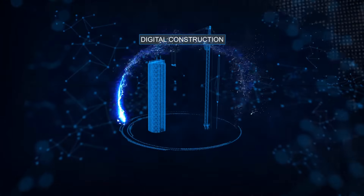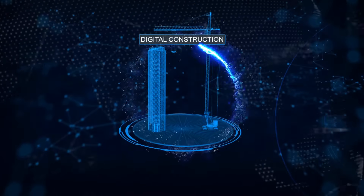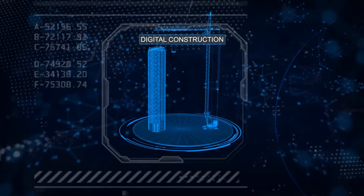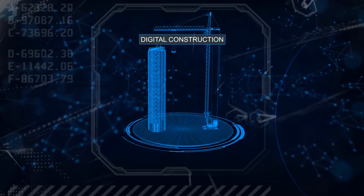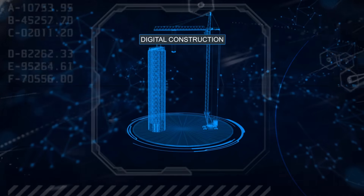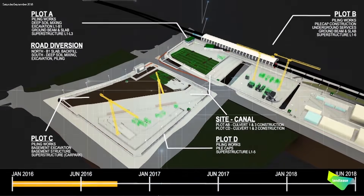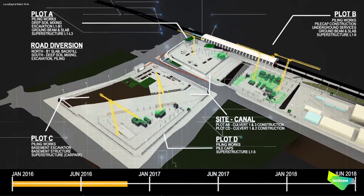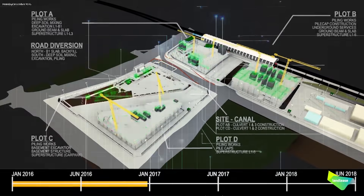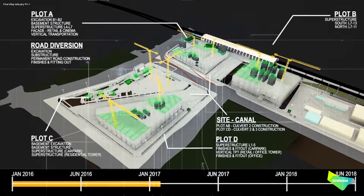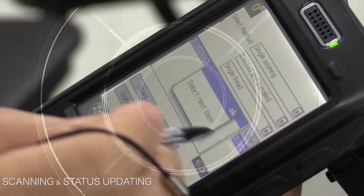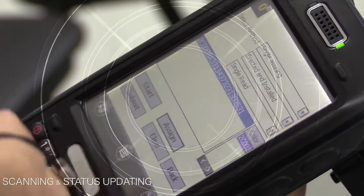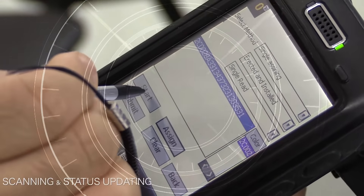Digital construction involves the delivery and installation of off-site components on site using real-time ICT solutions. The contractor uses the coordinated BIM model to plan the construction activities and scheduling. The site supervisor tracks the delivery status of modules and other materials.